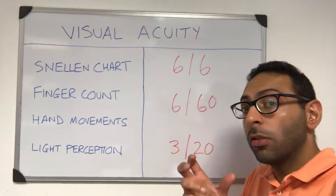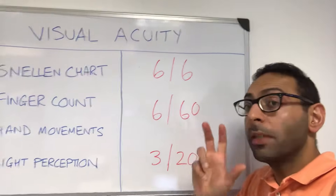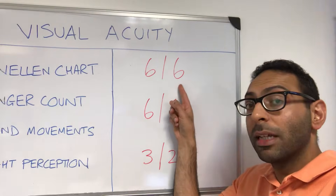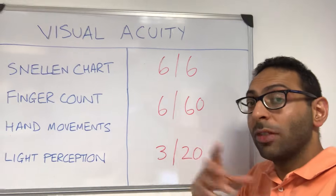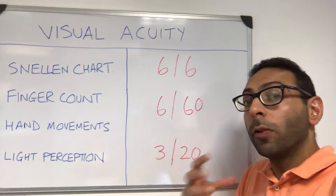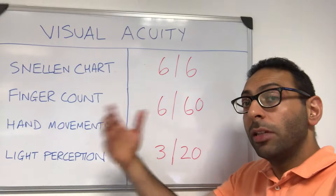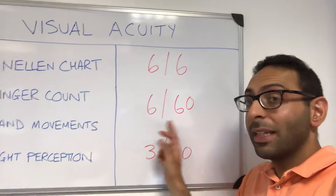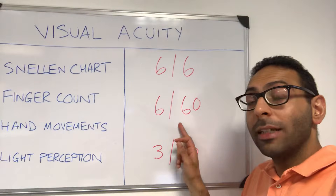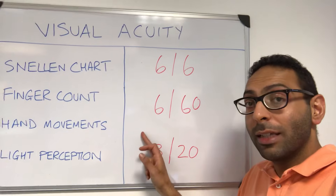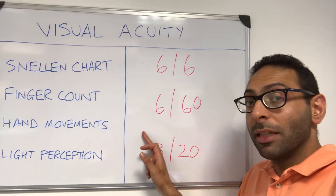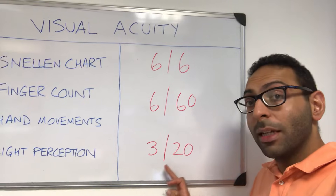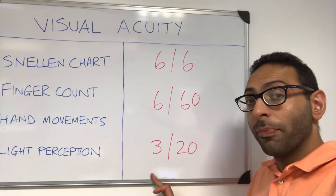So how do you document it? A documentation of 6/6 means that what a normal person can see at six meters, you can see at six meters. I say to patients: what your friend can see at six meters, you can see at six meters. A VA of 6/60 means what your friend can see at 60 meters, you can see at six meters. A VA of 3/20 means what your friend can see at 20 meters, you can see at three meters.